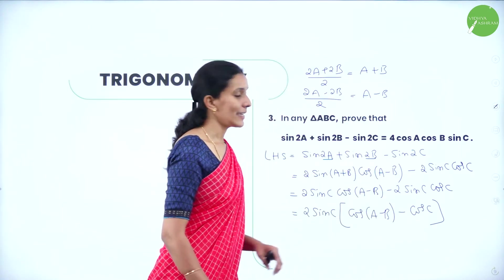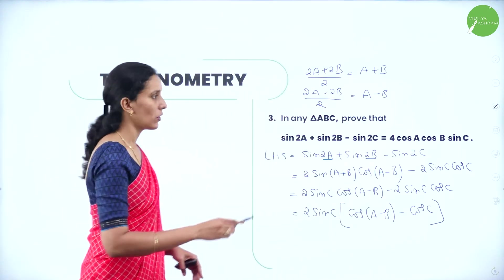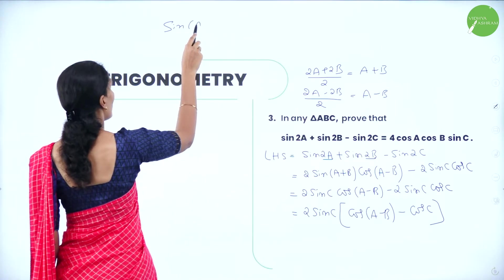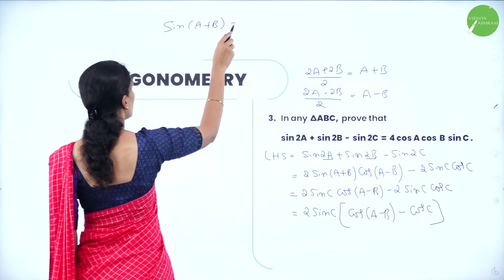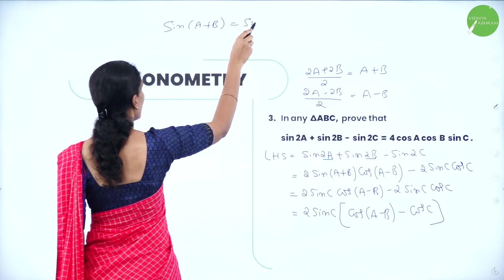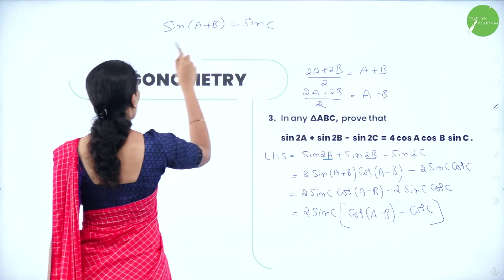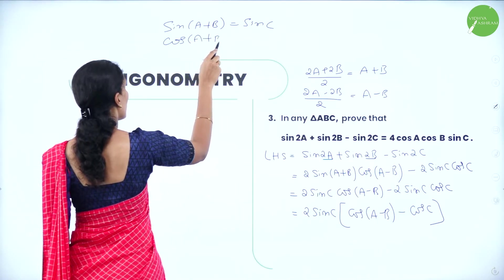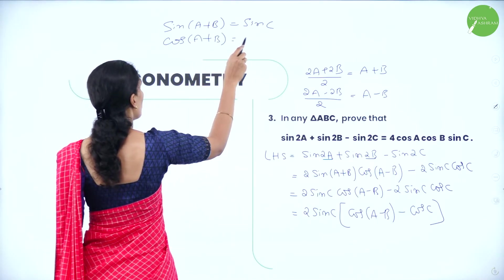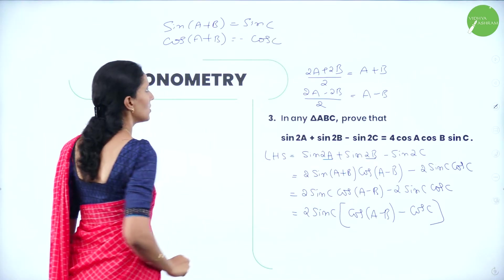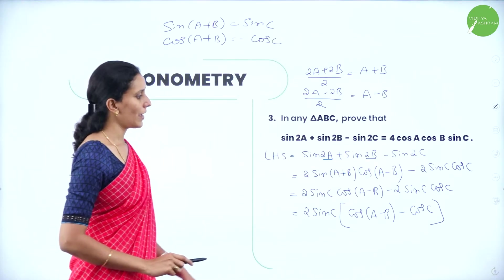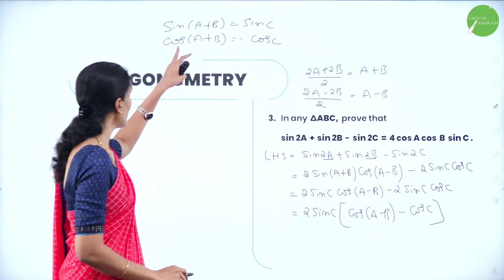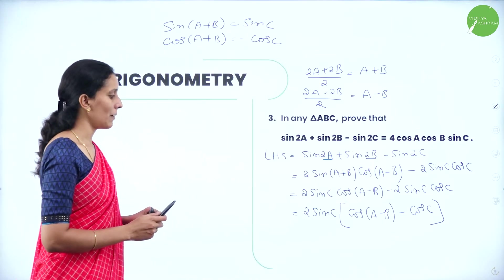Now replace −cosC: since cos(A+B) = −cosC, we have cosC = −cos(A+B). So cos(A−B) − cosC = cos(A−B) + cos(A+B). Using the transformation formula, cos(A−B) + cos(A+B) = 2cosA·cosB.